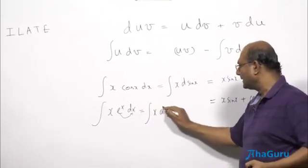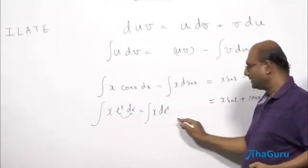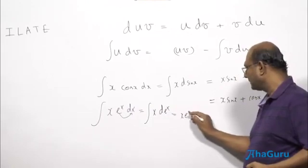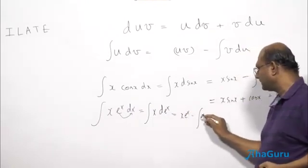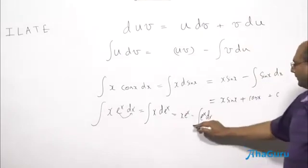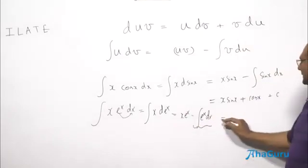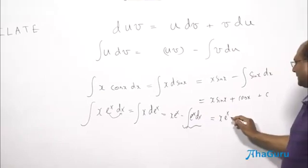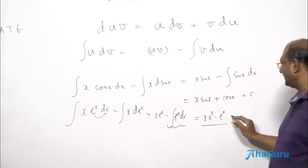Integral X d(E power X) multiply and flip. What is this? E power X. So the answer is X E power X minus E power X plus constant.